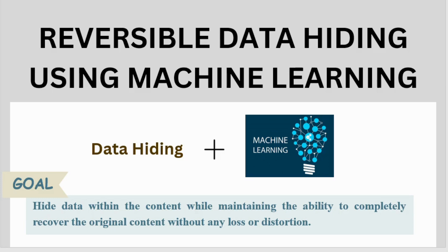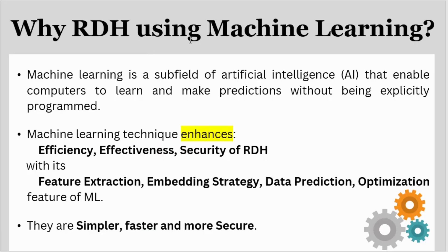Here comes the main topic: reversible data hiding using machine learning — hiding data with the help of machine learning technology. Its goal is similar to reversible data hiding: hiding data within content while maintaining the ability to completely recover the original content without any loss or distortion. Machine learning is a subfield of artificial intelligence that enables computers to learn and make predictions without being explicitly programmed. It helps enhance efficiency, effectiveness, and security through feature extraction, embedding strategy, data prediction, and optimization — making the process simpler, faster, and more secure.